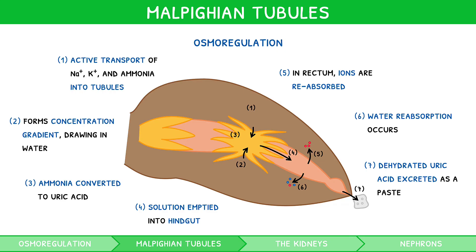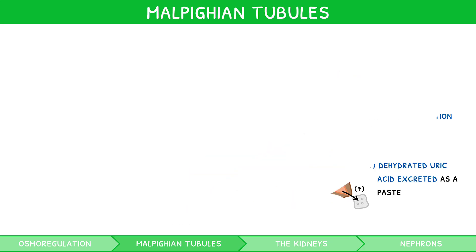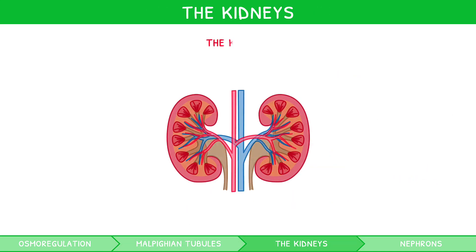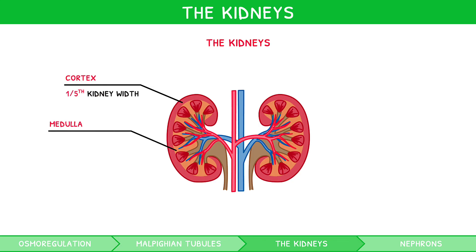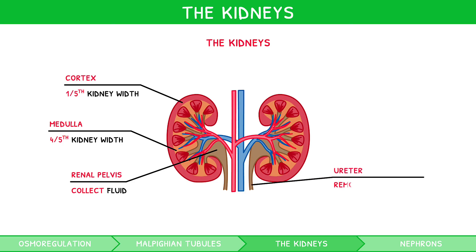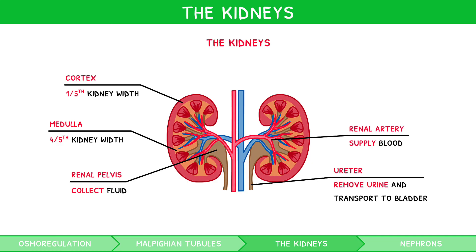You now know how arthropods osmoregulate — but what about humans? The kidneys are two bean-shaped organs located in the mid-back. Each consists of six main structures you must be comfortable labelling and drawing: an outer cortex drawn as one-fifth of the width of the kidney; an inner medulla drawn as four-fifths of the width; a renal pelvis containing a system of chambers that collect fluid; a ureter to remove urine and transport it to the bladder; a renal artery to supply blood, drawn with a narrow lumen; and a renal vein to remove blood, drawn with a wider lumen.